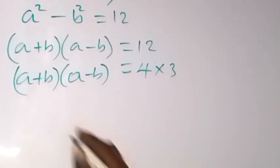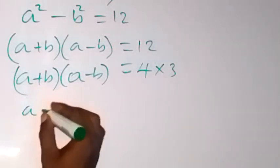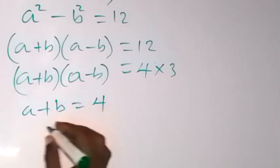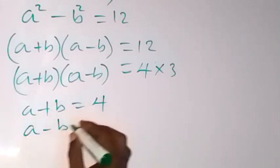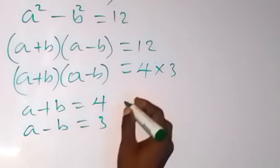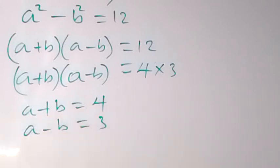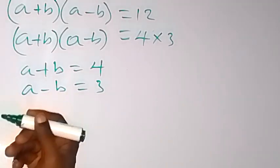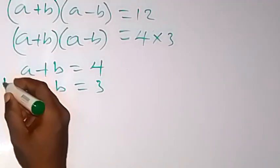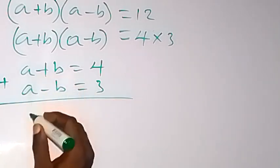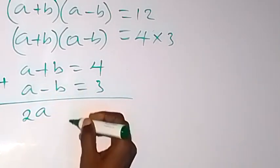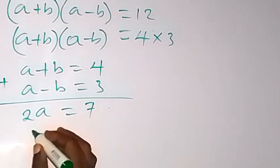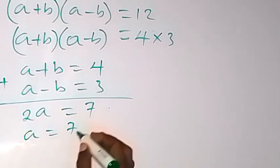We now have a plus b equals 4 and a minus b equals 3. We can solve these two equations. When we add them, b cancels, giving 2a equals 7. That means a equals 7 over 2.